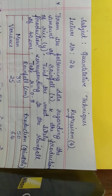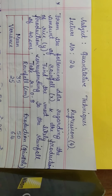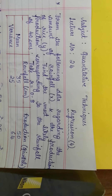So the problem goes like this: from the following data regarding the amount of rainfall x and the production of rice y, find the most likely production corresponding to the rainfall of 40 centimeters. Take r equal to 0.8, where r is nothing but the coefficient of correlation.